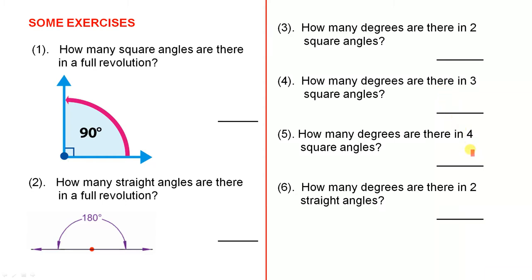How many degrees are there in four square angles? And how many degrees are there in two straight angles? You can answer that one because you know that one straight angle is 180.